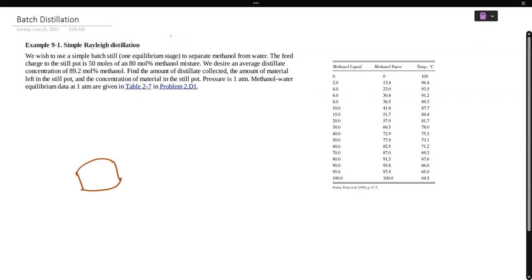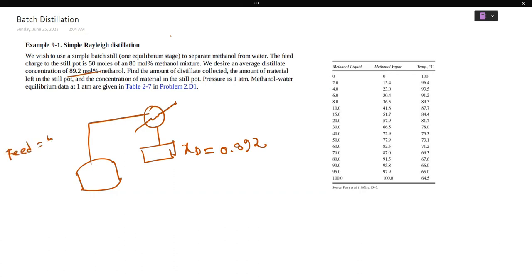Suppose we have a distillation plot. This is our condenser. We have xd equal to 89.2 mole percent, so it is 0.892. And we have feed from the sample, and xf is 0.8.